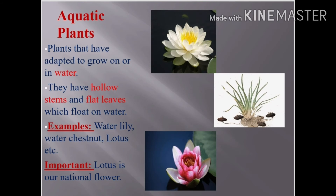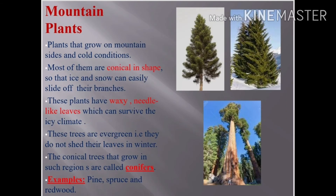Moving to the next type — aquatic plants. Aquatic means water plants. Plants that grow in water are called aquatic plants. Their specialties are that they have a hollow stem and flat leaves, which help them float on water. You can see an example of water lily here. Lotus is also an aquatic plant and is our national flower.